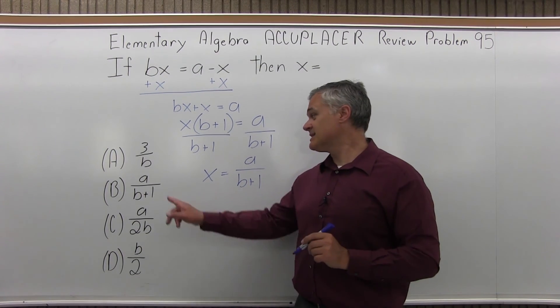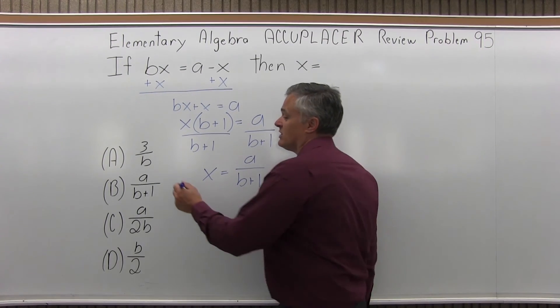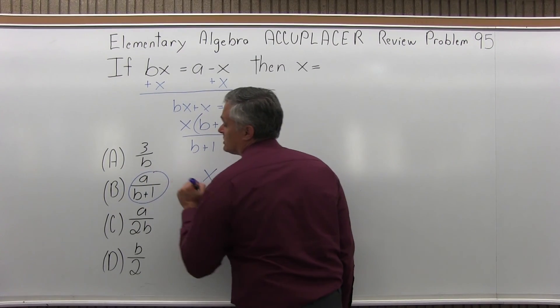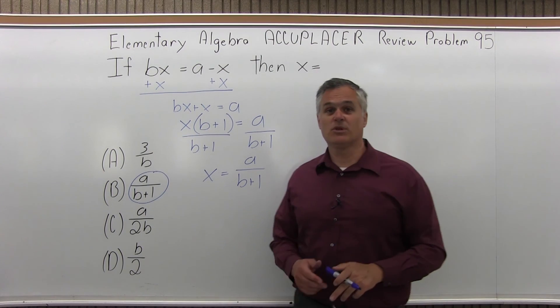But if I look at my options, that is exactly option B. So the answer to problem 95 is option B, a over B plus 1.